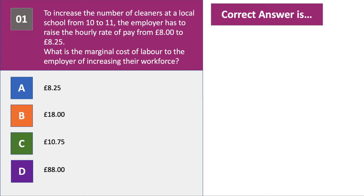Question number one. To increase the number of cleaners at a local school from 10 to 11, the employer has to increase the hourly rate of pay from £8 to £8.25. The question is: what is the marginal cost of labour to the employer of increasing their workforce? Press the pause button, have a go at the question, and then press play when you want to go through the answer.